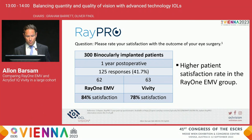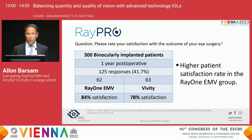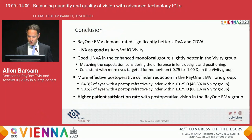We sent the questionnaire to 300 binocularly implanted patients and received responses from 42%. Satisfaction was excellent with both — in this group, including not only cataract patients but also refractive lens exchange patients, so perhaps a little more demanding — 84% satisfaction with the Ray-1 EMV and 78% satisfaction with the Vivity lens. We presume that difference in satisfaction is due to either tolerability of mini-monovision or the improved distance vision you get with the Ray-1 EMV.